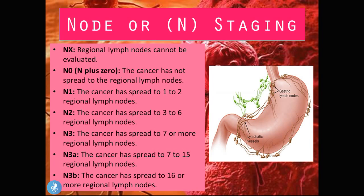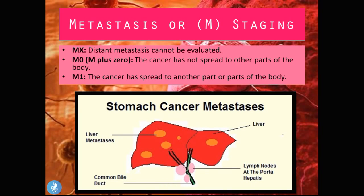For lymph node staging: NX means regional lymph nodes cannot be evaluated; N0 means no spread to regional lymph nodes; N1 means spread to 1–2 regional lymph nodes; N2 means spread to 3–6; N3 means spread to 7 or more, with N3a being 7–15 and N3b being 16 or more. For metastasis staging: MX means distant metastasis cannot be evaluated; M0 means no spread to other parts of the body; M1 means the cancer has spread to other parts of the body.